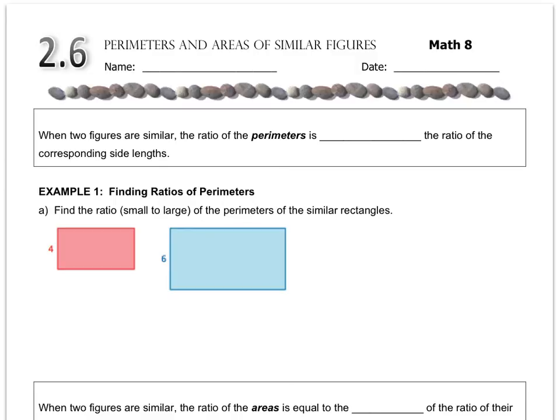There's a pretty cool property about similar figures that has to do with their perimeters and areas. The first thing we'll look at is the relationship between the perimeters of similar figures. When two figures are similar, the ratio of the perimeters equals the ratio of the side lengths. If you know the relationship between the side lengths, you know the relationship between the perimeters, and vice versa.